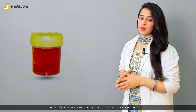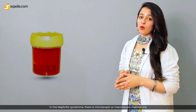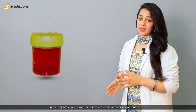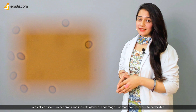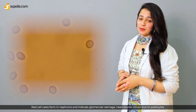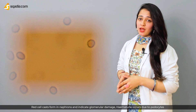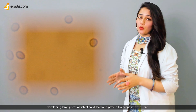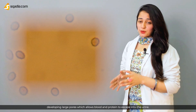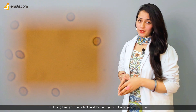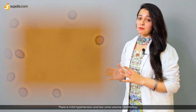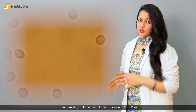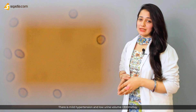In nephritic syndrome, there is microscopic or macroscopic hematuria. Red cell casts from nephrons indicate glomerular damage. Hematuria occurs due to podocytes developing large pores, which allow blood and proteins to escape into the urine. Proteinuria is comparatively low, and there is mild hypertension and low urine volume of less than 300 ml per day.